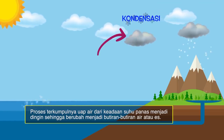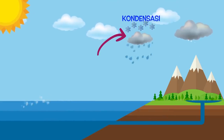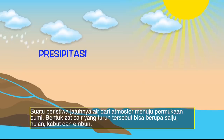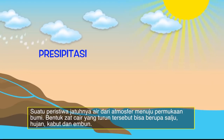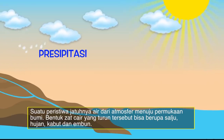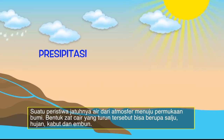Sudah mulai paham kan, Sobat? Yuk mari kita lanjutkan pada proses siklus air yang berikutnya, yaitu presipitasi. Apa sih presipitasi itu? Presipitasi adalah turunnya air yang tadi sudah terkumpul membentuk awan ke permukaan bumi. Uap air yang terkondensasi kemudian turun ke permukaan bumi sebagai air hujan. Peristiwa ini disebabkan oleh pengaruh perubahan suhu yang terjadi di lapisan atmosfer. Apabila suhu sangat rendah, ini mungkin saja di bawah 0 derajat Celcius, tetesan air tersebut akan jatuh sebagai salju atau butiran es.